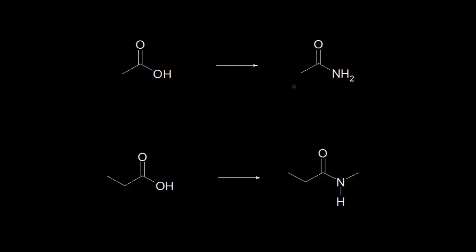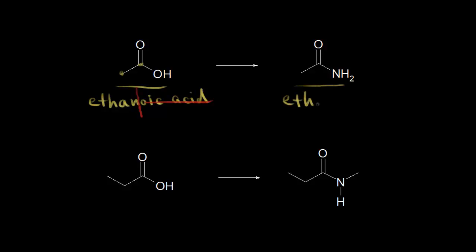If our goal is to name this two-carbon amide on the right, let's start with the two-carbon carboxylic acid on the left. We have two carbons, and the IUPAC name is ethanoic acid. To name the corresponding amide, we drop the 'oic acid' ending and add 'amide', giving us ethanamide.